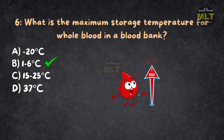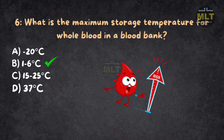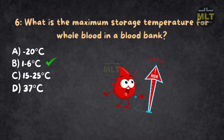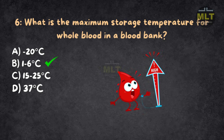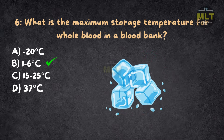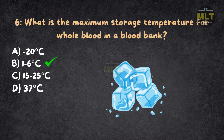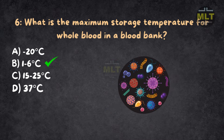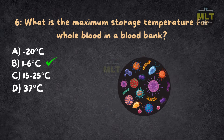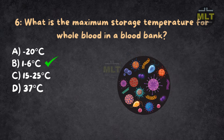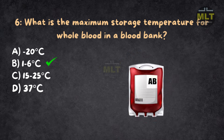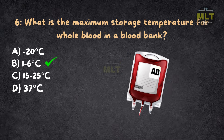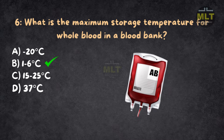Explanation: Whole blood must be stored between 1 to 6 degrees Celsius to prevent bacterial growth while keeping it viable for transfusions. Minus 20°C is too cold and could freeze the blood. 15 to 25°C is too warm, causing bacterial contamination. 37°C would damage the blood, making it unsafe for transfusion.